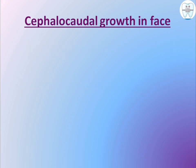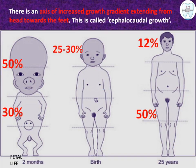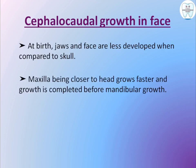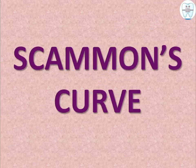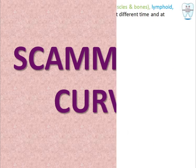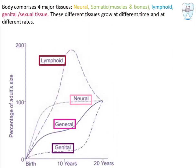The gradient runs from head towards the feet, so the maxilla, being closer to the head, grows faster. The mandible, being farther from the head, grows more slowly and its growth completes later than the maxilla. That covers cephalocaudal growth.